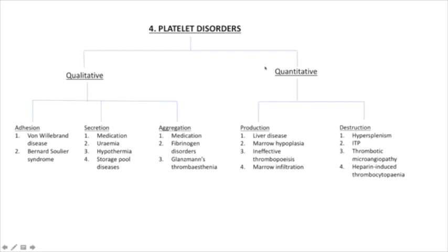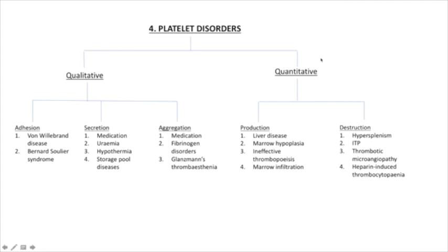On the right-hand side of the algorithm we consider quantitative issues. If it's decreased production, it could be due to liver disease — specifically diminished production of thrombopoietin, which stimulates the bone marrow to produce platelets. It could also be due to marrow hypoplasia, ineffective thrombopoiesis, or marrow infiltration — specifically with myelofibrosis or malignancies such as leukemia and lymphoma. These three causes also appeared in our previous algorithm on pancytopenia.